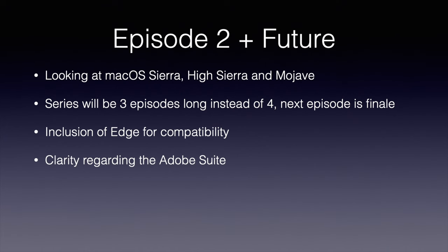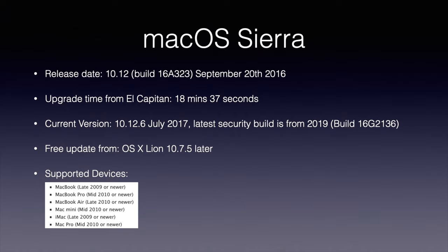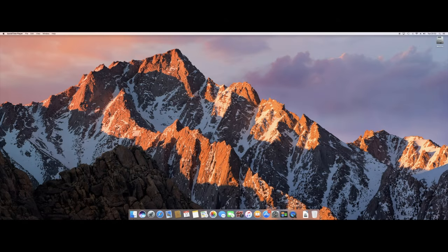So guys, macOS Sierra released on September 20th, 2016 with build 10.12. The upgrade time from El Capitan was 18 minutes and 37 seconds. The current version available is 10.12.6, released in July 2017, with the latest security build from 2019. It's a free update from OS X Lion 10.7.5. Supported devices include late 2009 or newer MacBook, MacBook Pro mid-2010 onwards, MacBook Air late 2010 or newer, Mac mini mid-2010 or newer, iMac late 2009 or newer, and Mac Pro mid-2010 or newer.